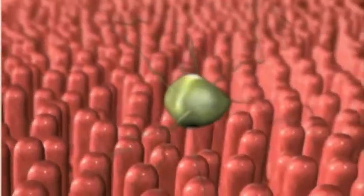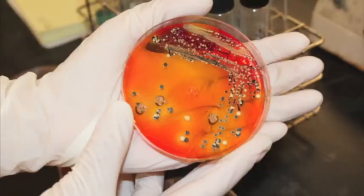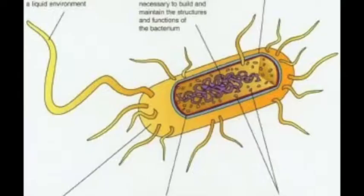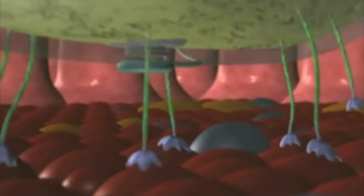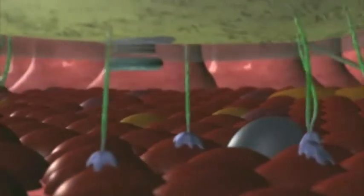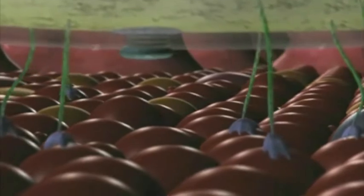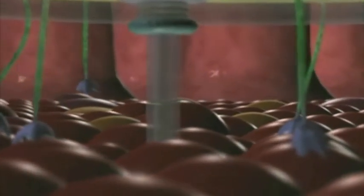Gram-negative means that the bacteria does not retain the violet dye when stained by Gram's method, because it has a relatively thin cell wall and is resistant to the effects of antibiotics or the actions of the body's immune cells. Salmonella has basic bacterial structures such as cell wall, flagellum, capsule, plasma membrane, ribosome, and DNA. What is unique about it is that it has a special needle-like organelle that injects proteins into cells, helping deliver toxins into the host cell.